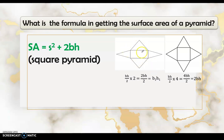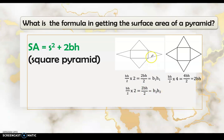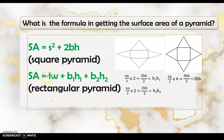The triangles have different bases and different heights — this height is longer than the height of the other pair. For the other two triangles: base × height ÷ 2 × 2 simplifies to b₂h₂. Therefore, the formula for the surface area of a rectangular pyramid is: SA = lw + b₁h₁ + b₂h₂, where lw is the area of the rectangular base.